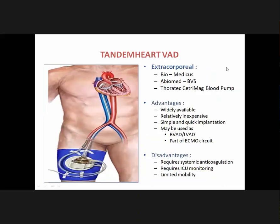The next commonly used percutaneous device is the Tandem Heart — an extracorporeal system available under various trade names including Biomedicus, Abiomed, BVS, and Thoratec Centrimag blood pump. Its major advantages are wide availability, relatively low cost, simple and quick implantation, and it can be used for either left or right ventricular assist, or as part of an ECMO circuit. The major disadvantages are the requirement for systemic anticoagulation, need for ITU monitoring, and limited patient mobility.